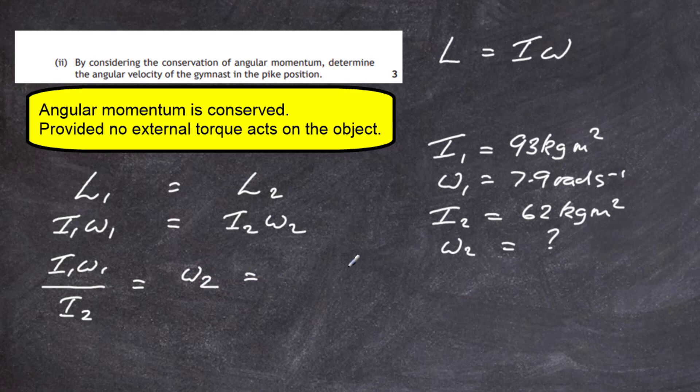So let's put in the numbers then. The number is quite simple. I1 is going to be 93 multiplied by 7.9, put a bracket around that, divided by I2 which is 62. And our answer comes out to be 11.85 radians per second.